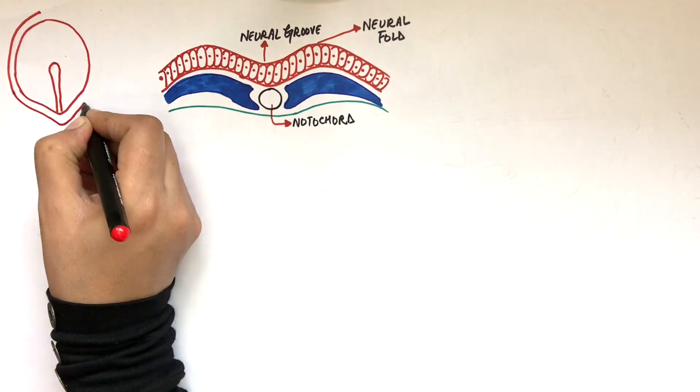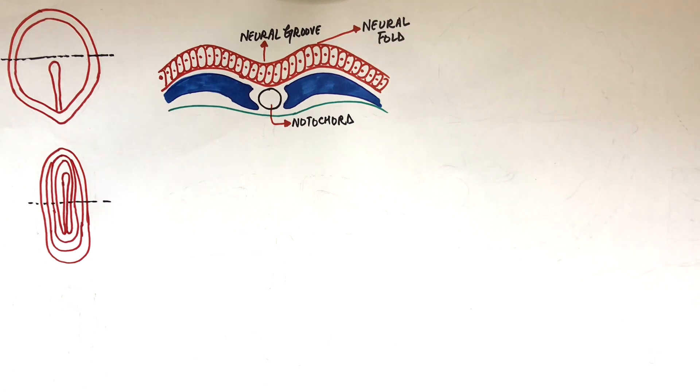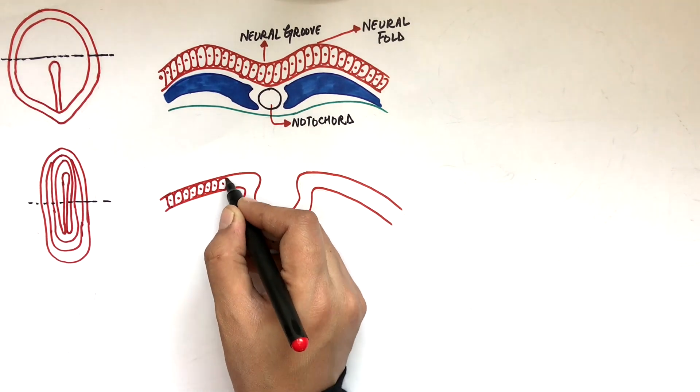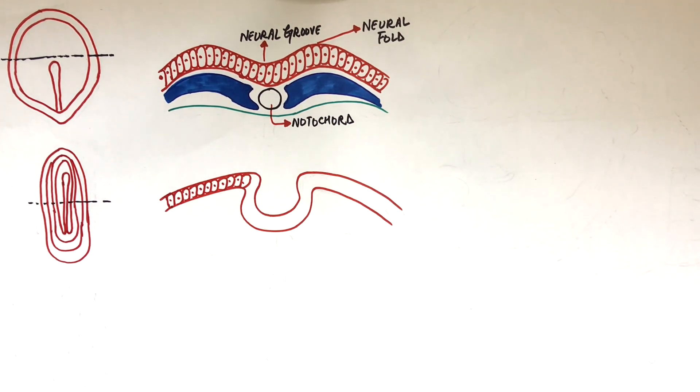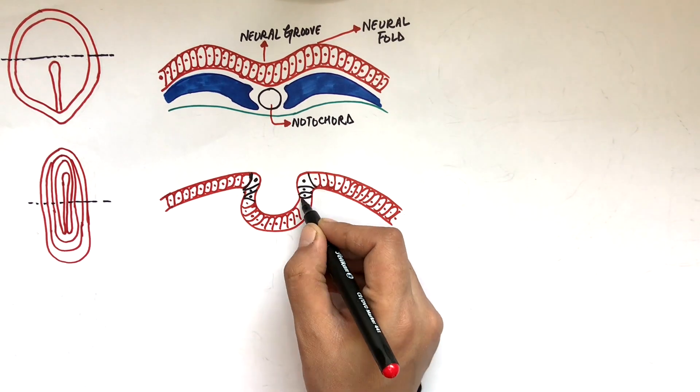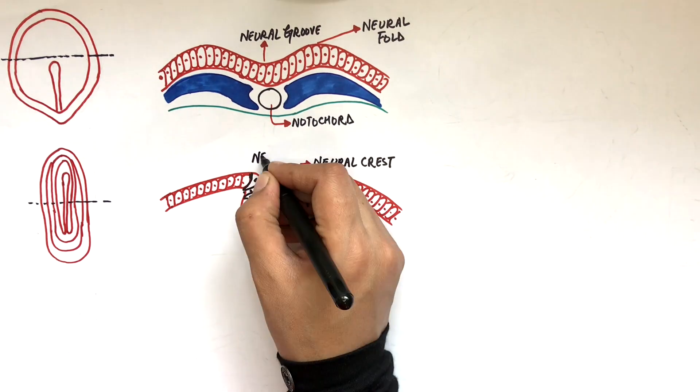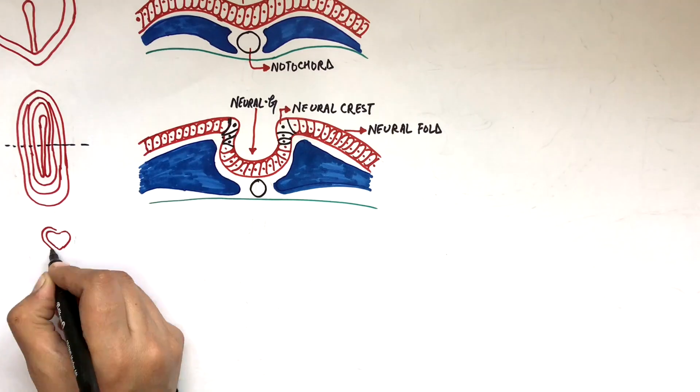And this was a cross-sectional view which we talked about. While the neural groove will keep depressing downwards, the neural folds will keep raising upwards. The cells present at the edges of these neural folds become the neural crest, which will later on detach as the neural folds meet each other and the neural tube is formed.